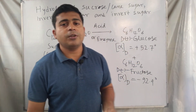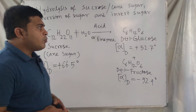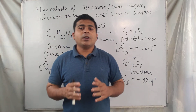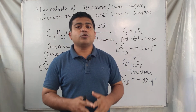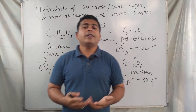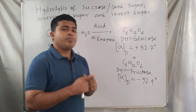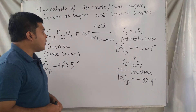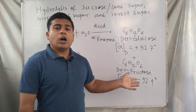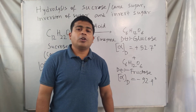This inversion of sugar and hydrolysis of cane sugar producing invert sugar is a very important question for examinations. The question is: why is sucrose called invert sugar? The answer is that the inversion of specific rotation is shown in the resulting mixture after hydrolysis — that is the reason why sucrose is called invert sugar.